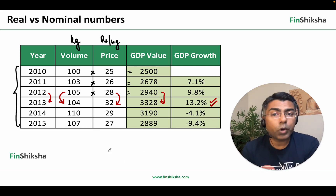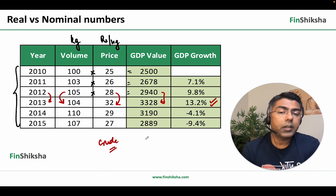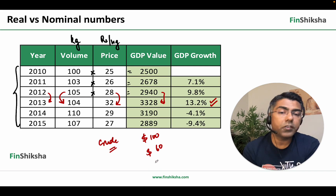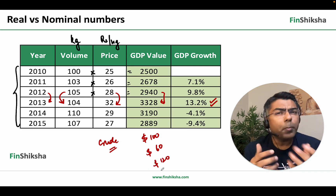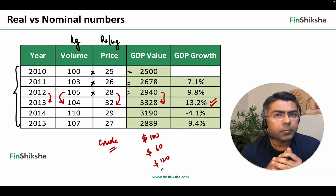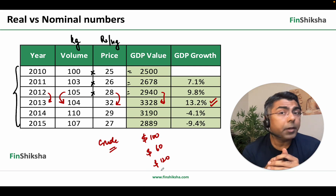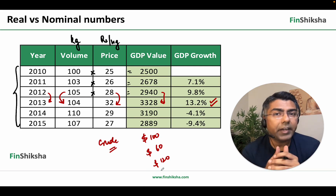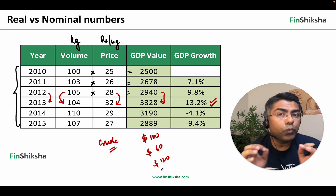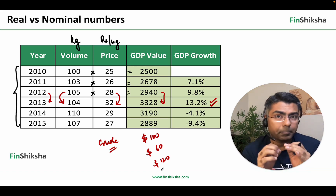Imagine doing this for a country that produces crude oil. One year the price is $100, next year the price is $60, the year after that the price is $120. Your nominal GDP number will be all over the place and may not give you a very good understanding of where the country is really headed. In these scenarios, you want to remove this impact of the pricing.